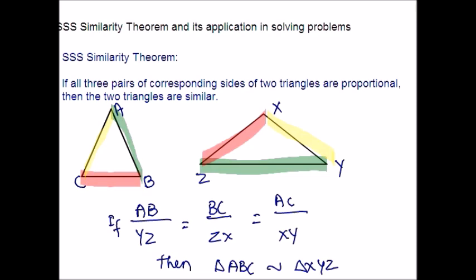Now let's see: if you were given a pair of triangles and the side lengths for all three sides, how could you use this information to determine if two triangles are similar? Let us see how we can do this by solving some problems on the board.